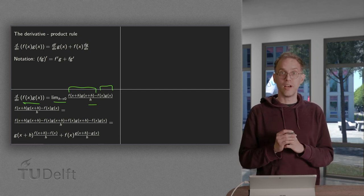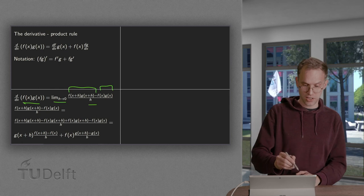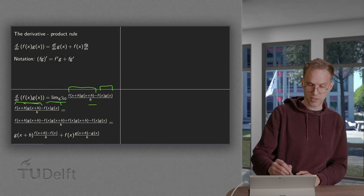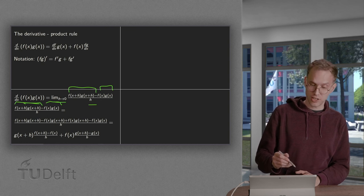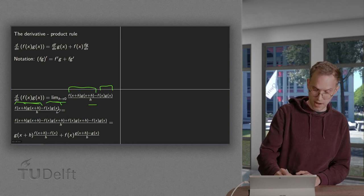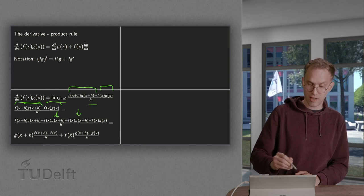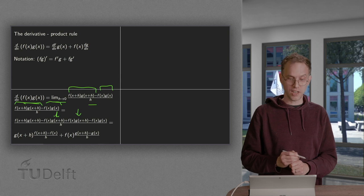And now we will rewrite this expression. This f times g at x plus h minus f times g at x. We will add 0 in between: minus f of x times g at x plus h plus f of x times g of x plus h.